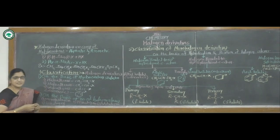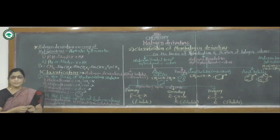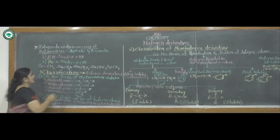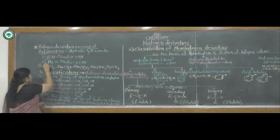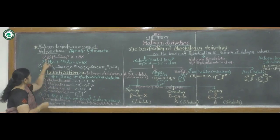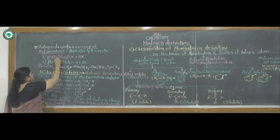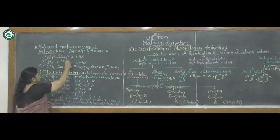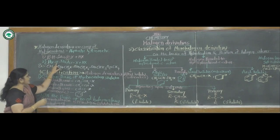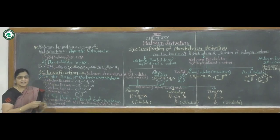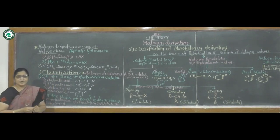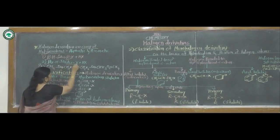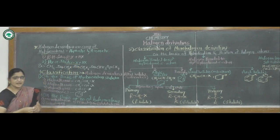Hydrocarbons are of two types: aliphatic hydrocarbons and aromatic hydrocarbons. Aliphatic hydrocarbons are represented as RH and aromatic hydrocarbons as ArH. If aliphatic hydrocarbons react with halogen, one hydrogen is replaced by a halogen atom and it forms alkyl halides. If a hydrogen atom of aromatic hydrocarbons is replaced by a halogen atom, it forms ArX, that means an aromatic halogen derivative.